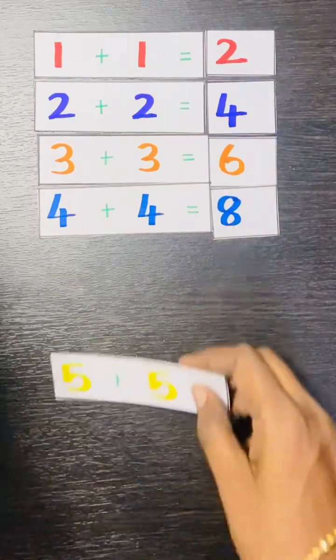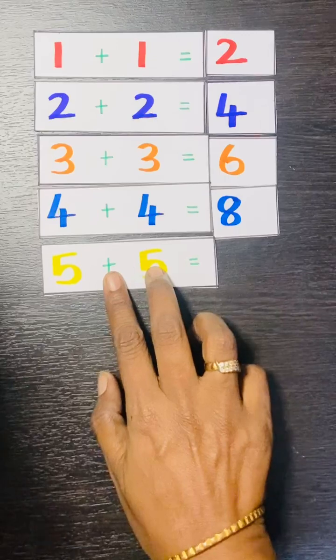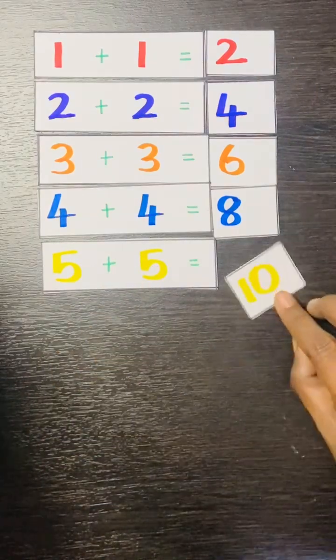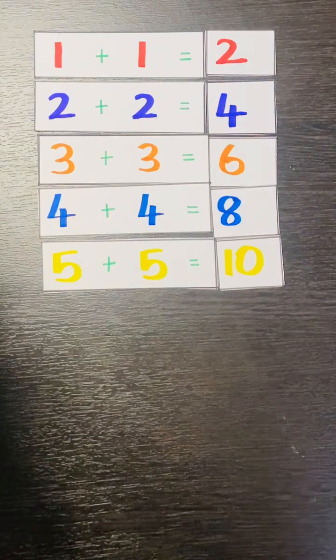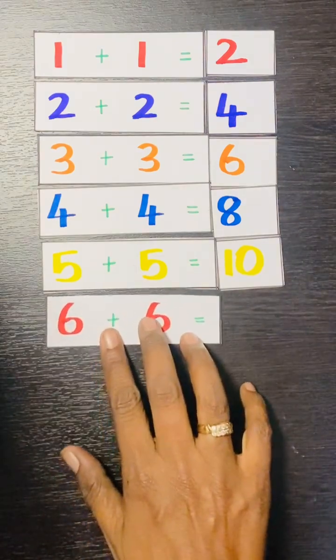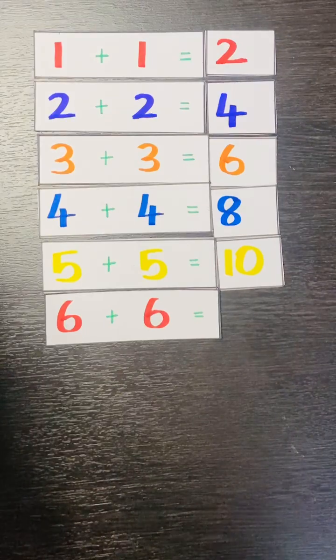5 plus 5. 5 plus 5, very easy. The answer is 10. 6 plus 6. 6 plus 6 is equal to 12.